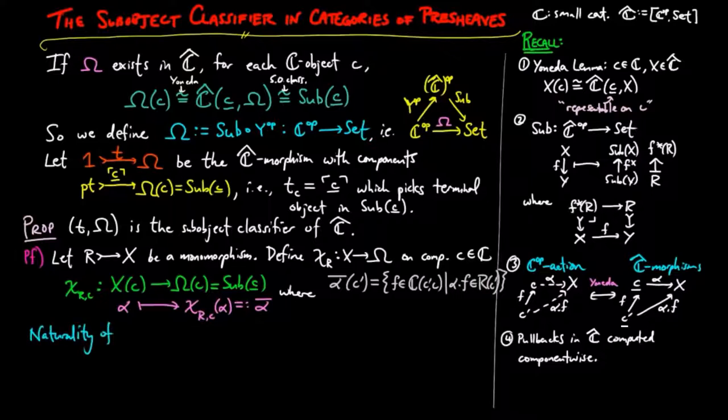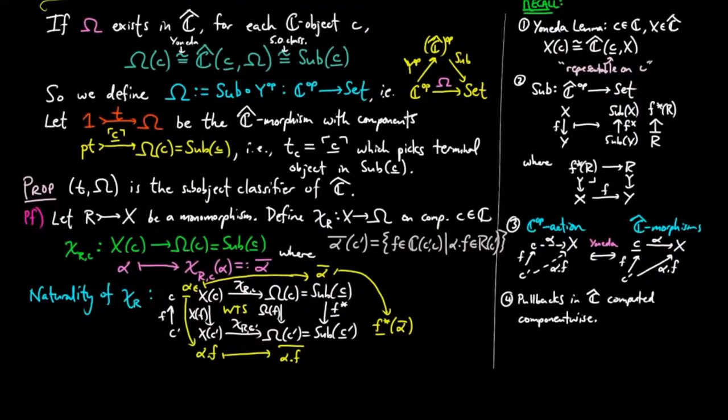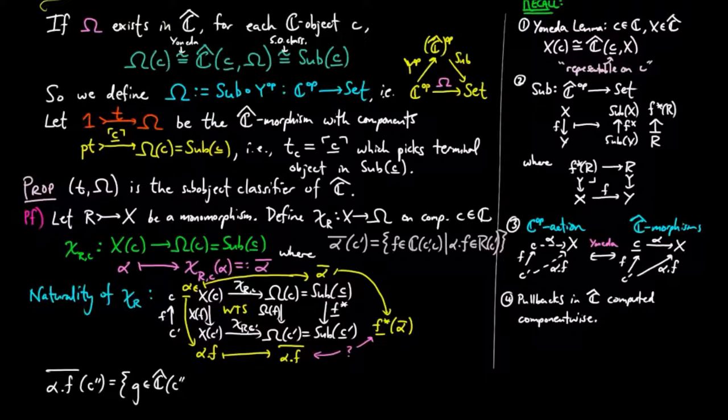To show naturality of chi sub-R, we want to show the following commutes for each C-morphism F. If alpha is a C-figure of X, then the high road gives us underline F upper star alpha bar, and the low road gives us bar alpha dot F. C double-prime figures of bar alpha dot F, by definition, are those C-morphisms G from C double-prime to C-prime, such that alpha dot FG is a C double-prime figure of R.